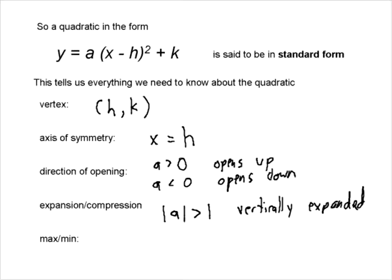And if the absolute value of a is less than 1, meaning it's a fraction between negative 1 and 1, then the graph has been vertically compressed or compressed vertically. That's the graph that has been squished.